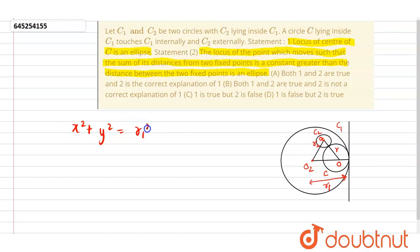And C2 will be x minus a square plus y minus b square is equals to r2 square. Now let's center C be h comma k with radius r.